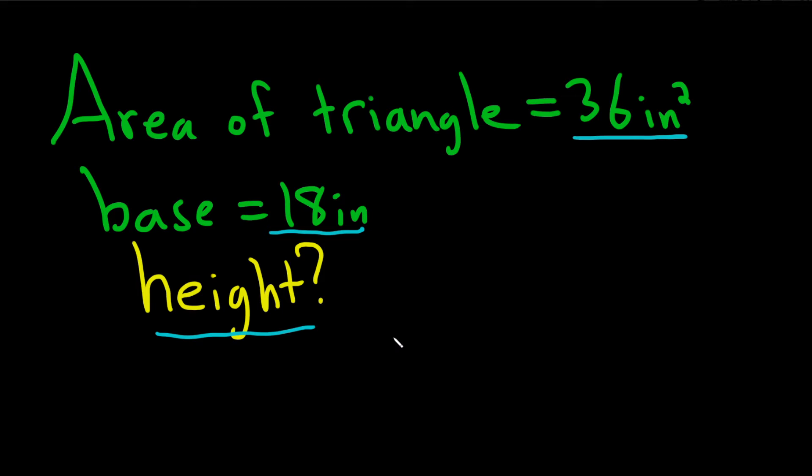The first thing you want to do in a problem like this is just write down the formula for the area of a triangle. A, which is the area of a triangle, is equal to one-half times the base times the height.